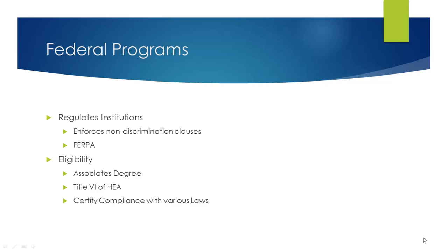Proprietary institutions can also apply for and receive federal financial aid if their instruction is at least 15 weeks and prepares students for gainful employment in a recognized occupation. They must also meet specific completion rates, placement rates, and other requirements. For-profit institutions can receive federal aid, but they must follow the same regulations that private and public institutions do.